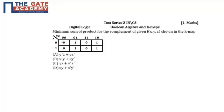So, since we are supposed to find the minimum sum of product for the complement of the given function, for minimum sum of complement the zeros become ones and ones become zero.